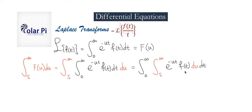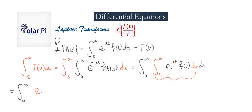Notice that in this order of integration, we integrate with respect to u first. So f of t is a constant, and minus t is also a constant. We're essentially doing the integral of e to the minus ut, keeping constants in mind. If we evaluate from s to infinity, we get e to the minus ut divided by minus t.